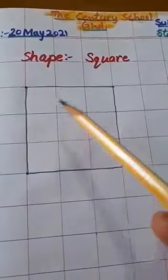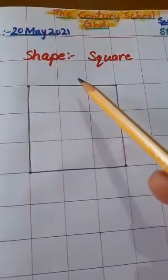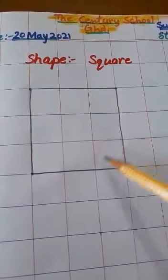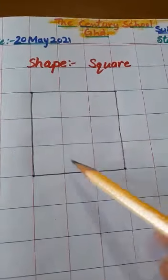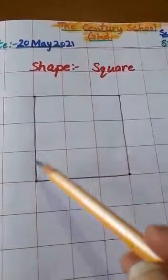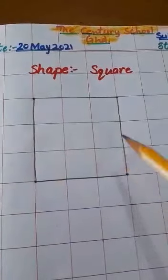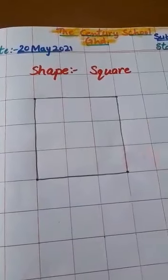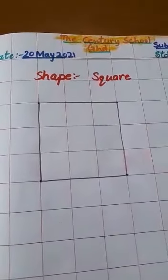See, it has 4 sides: 1, 2, 3, 4. This is square.